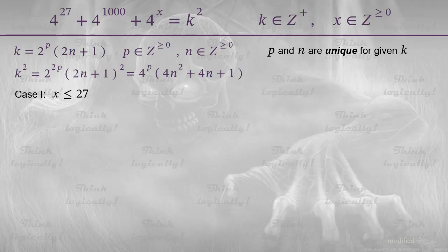Let's start with case 1. x is less or equal to 27. In this case, 4 to the power of x is the lowest term, and we factor it out. The powers are reduced by x, while the last term turns into 1. Now, if x equals 27, we have another term equal to 1. So, the expression in the brackets becomes 4 to the power of 1000 minus x plus 2.